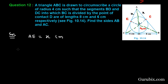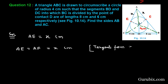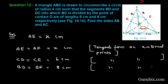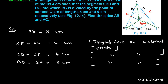Let AE equal X centimeters. Therefore AF will also be X centimeters, because tangents from an external point are equal in length. Similarly, CD equals CE equals 6 centimeters, and BD equals BF equals 8 centimeters, for the same reason.